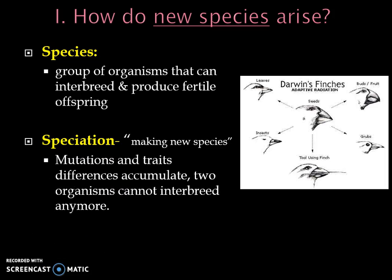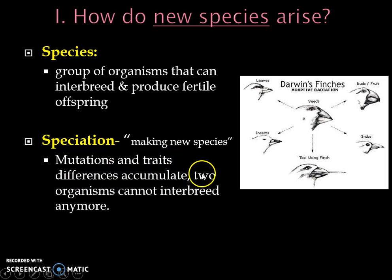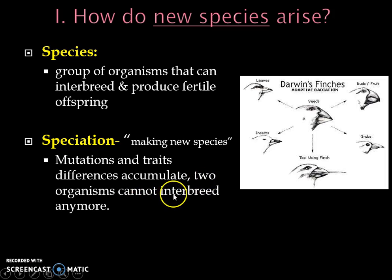Speciation, which is our major focus today, is the process of making a brand new species. This occurs because there have been a lot of mutations and trait differences that have accumulated, causing an original population of organisms to separate so that they can no longer interbreed. This idea of no longer being able to reproduce together because of accumulated differences is what makes a species form for the first time.